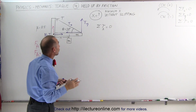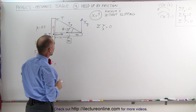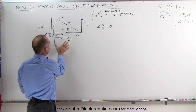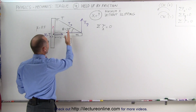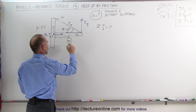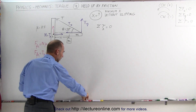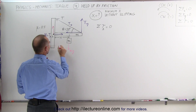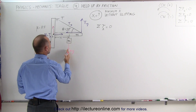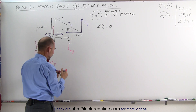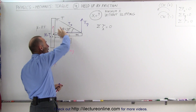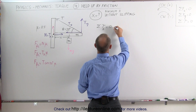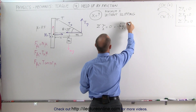The first torque is caused by the mass hanging down from the beam. It is at distance X from the pivot point. The force mg acts downward, and the perpendicular distance from the line of action to the pivot point is X. This causes a clockwise, negative torque: minus mg times X.